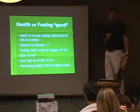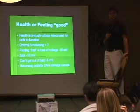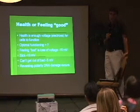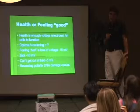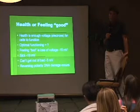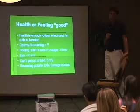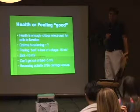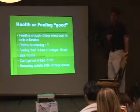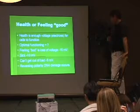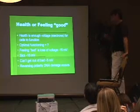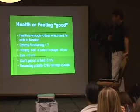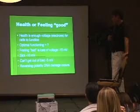We're not anywhere near optimal — we haven't even gotten to normal functioning. I think adulthood should begin at about 100 to 110; just play around for the first 100. Feeling bad is a loss of voltage — from minus to minus 15 millivolts. Sick is minus 10; can't get out of bed is minus 10.